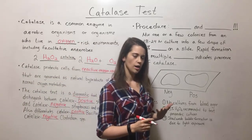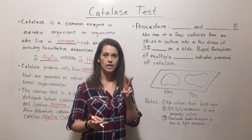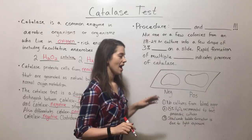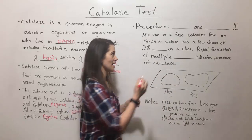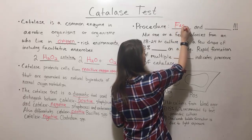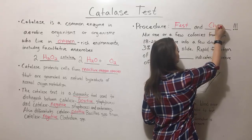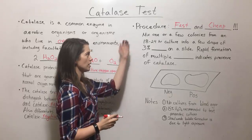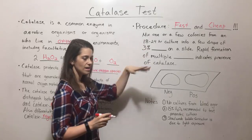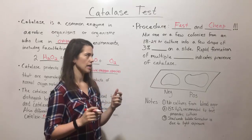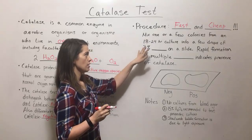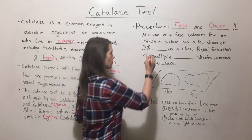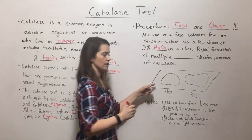So now let's talk about the catalase test itself. Two really critical factors that make it such a great diagnostic tool are that the procedure is really fast and also really cheap, which makes it very easy and convenient to carry out. What you do is mix one — or sometimes more than one, depending on the size of the colony — one or a few colonies from a culture that's been growing for about 18 to 24 hours into a few drops of 3% hydrogen peroxide on a slide.